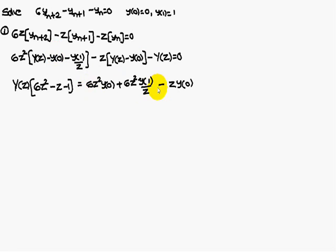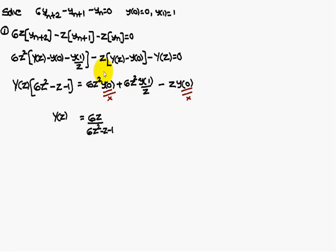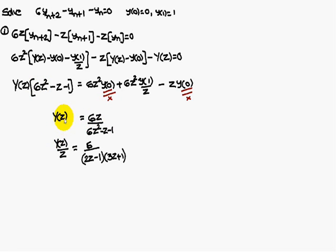Moving all remaining terms to the right-hand side: 6Z²·Y(0) plus 6Z²·Y(1)/Z minus Z·Y(0). Since Y(0) equals 0, those terms vanish. Y(1) equals 1, so 6Z²/Z gives 6Z. Therefore Y(Z) equals 6Z by (6Z² minus Z minus 1). Writing as Y(Z)/Z equals 6 by (6Z² minus Z minus 1).